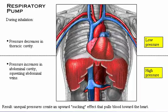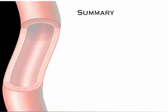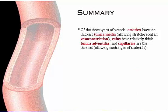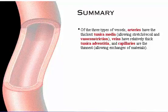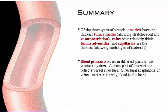Here's a summary of what we've covered. Of the three types of vessels, arteries have the thickest tunica media, allowing stretch, recoil, and vasoconstriction. Veins have a relatively thick tunica adventitia, and capillaries are the thinnest, allowing exchanges of materials. Blood pressure varies in different parts of the vascular system, and at least part of this variation reflects vessel structure. Structural adaptations of veins assist in returning blood to the heart.